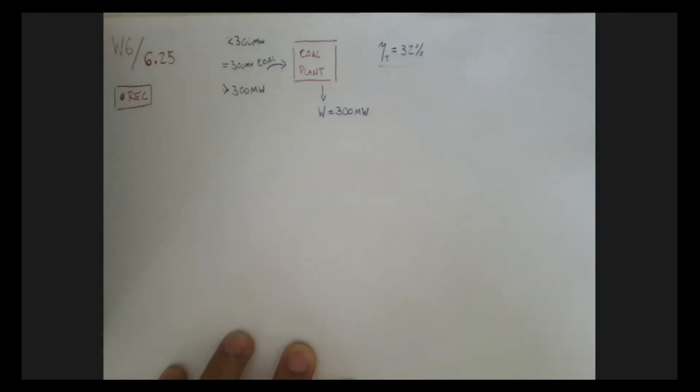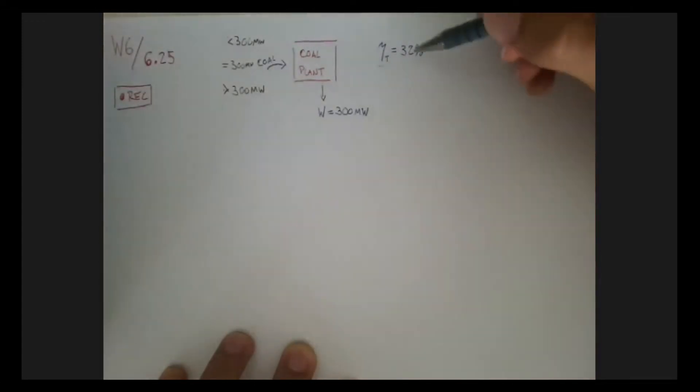Yep, right, more. That's right, because if it were 100% efficient, it means that all the energy I put into this would come out as useful work. In this case, it's 32% efficient, so I'm going to have to put more to be able to achieve this 300.